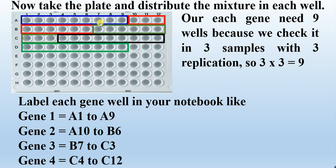Gene 2 occupies A10 to B6. Gene 3 occupies B7 to C3. Gene 4 occupies C4 to D3. And the internal control occupies D4 to D12. Label all of these in your notebook.